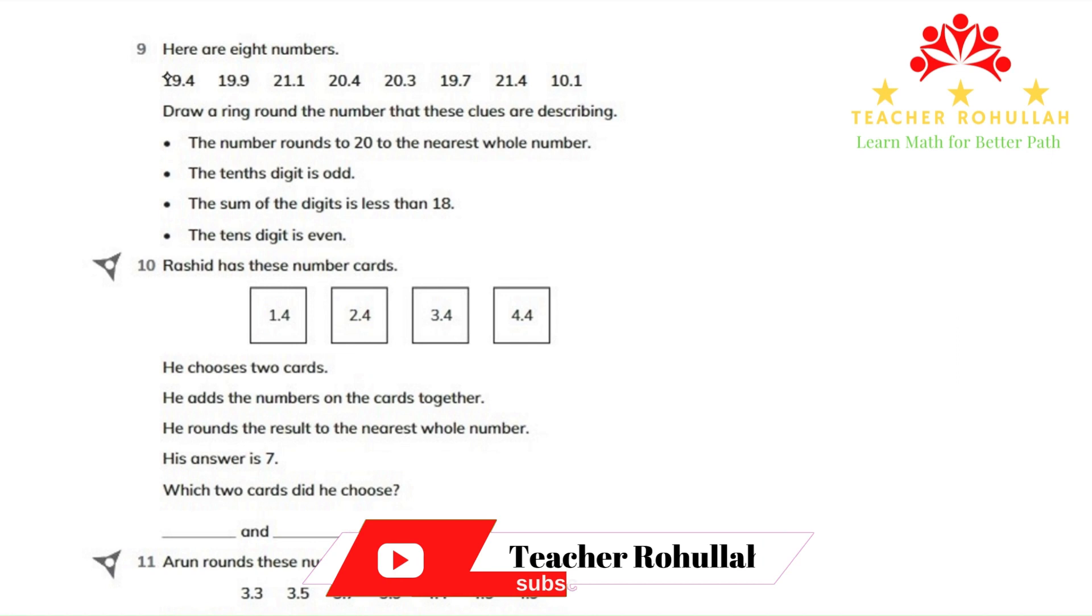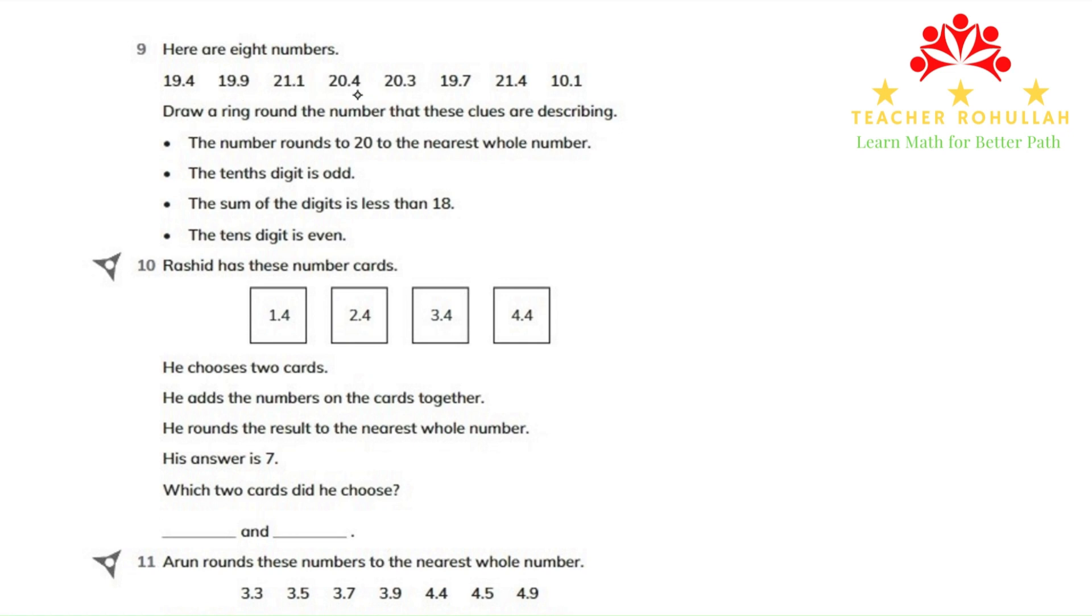In question number 9, it says here are eight numbers: 19.4, 19.9, 21.1, 20.4, 20.3, 19.7, 21.4, and 10.1.